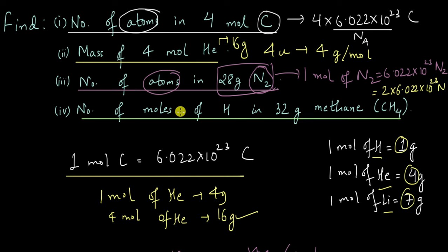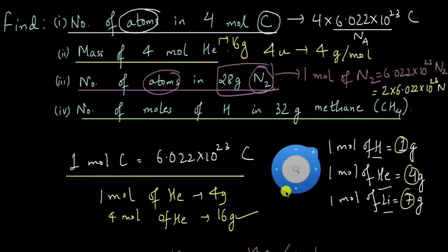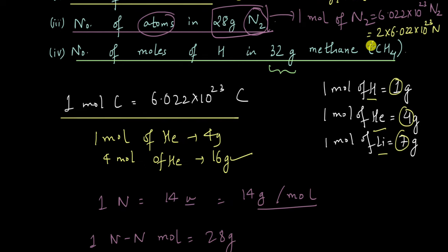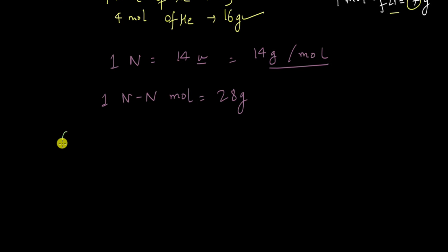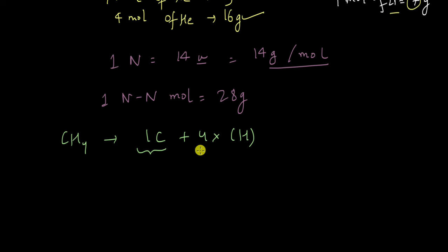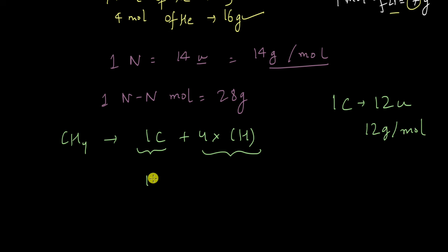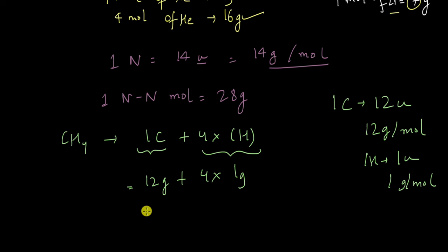Finally, the last problem: finding the number of moles of H atoms in 32 grams of methane, CH4. First, let us find the molar mass of CH4. CH4 is made of one carbon and four hydrogens. The molar mass of CH4 equals the molar mass of one carbon plus four times the molar mass of hydrogen. From the periodic table, one atom of carbon is 12u, so one mole of carbon is 12 grams. One mole of hydrogen is 1 gram, so four times that is 4 grams. The molar mass of CH4 is 12 + 4 = 16 grams.